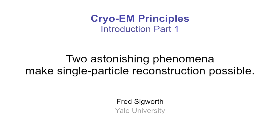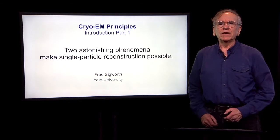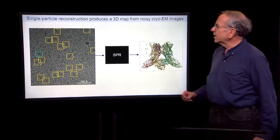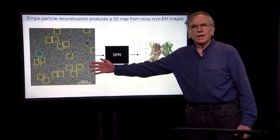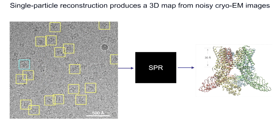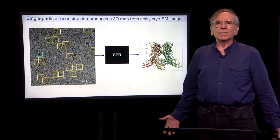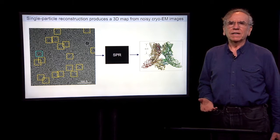In this lecture, I want to talk about two phenomena that I find absolutely amazing and which make single particle cryo-EM structure determination possible. In single particle cryo-EM, you start with an electron microscope image that looks really quite terrible with individual particles — your macromolecules of interest. A large number of these images are fed into a black box called single particle reconstruction, and out comes a density map from which you can fit an atomic structure.